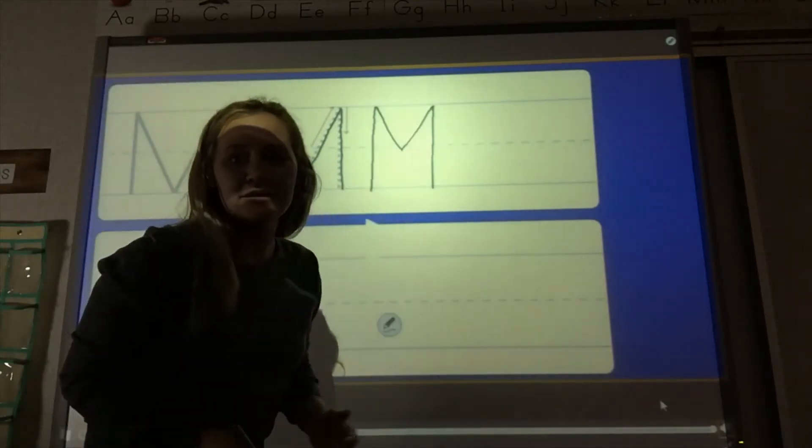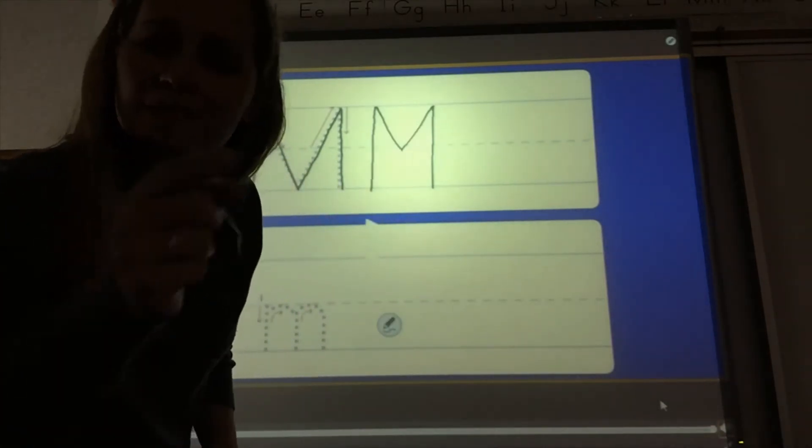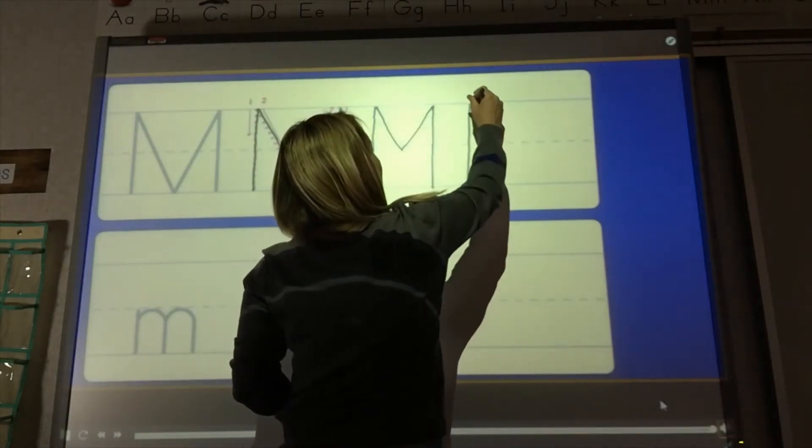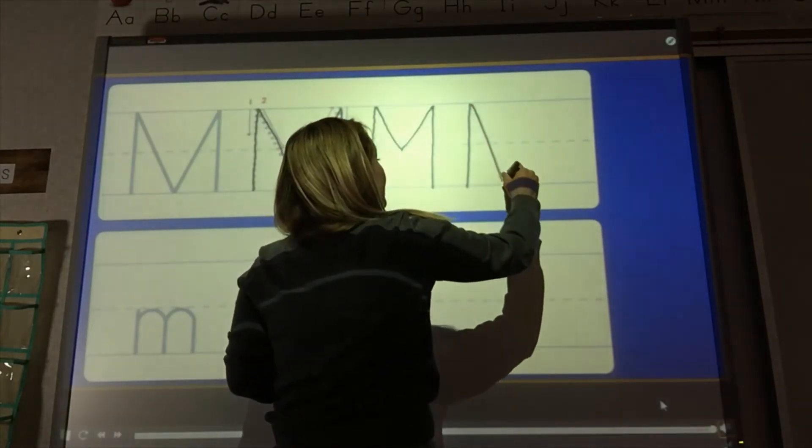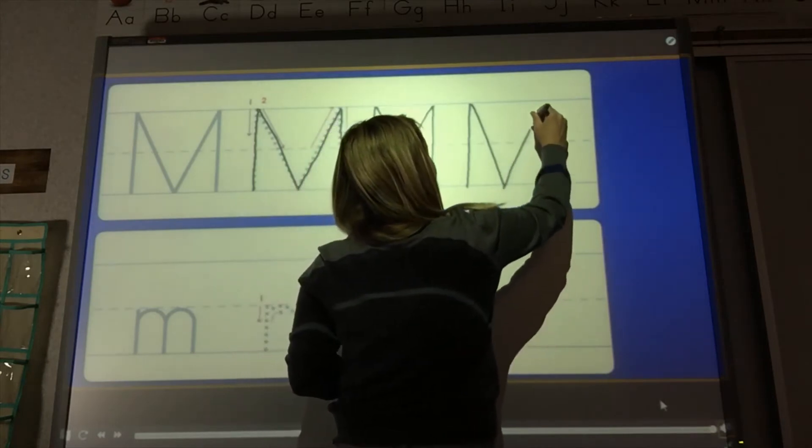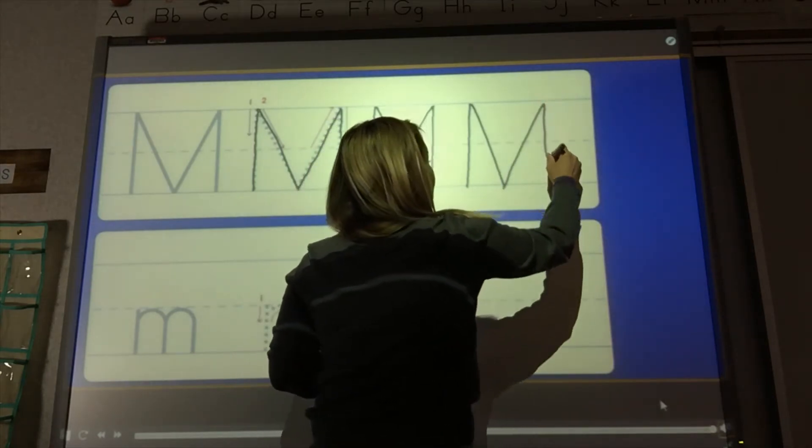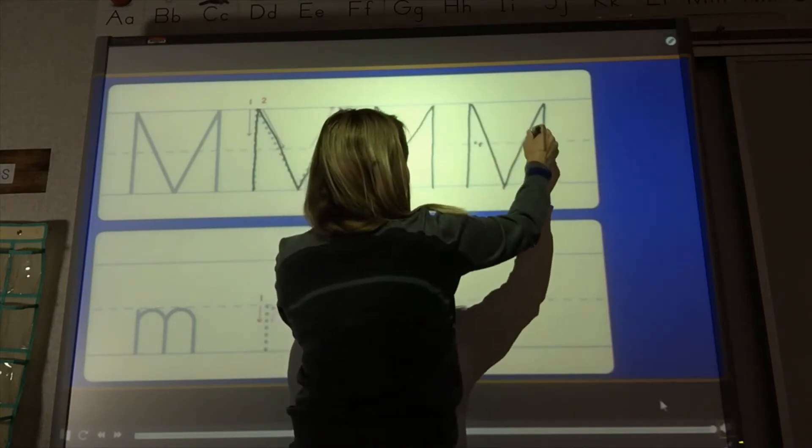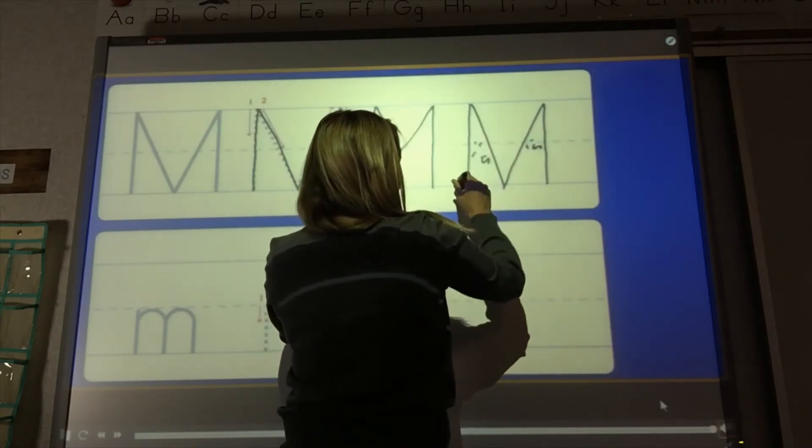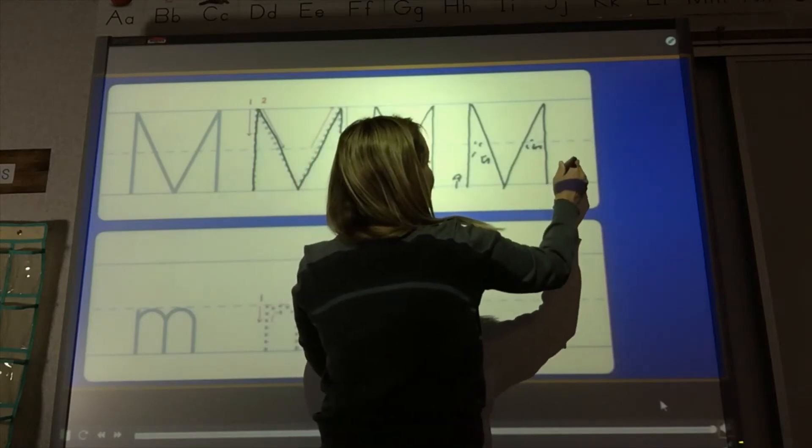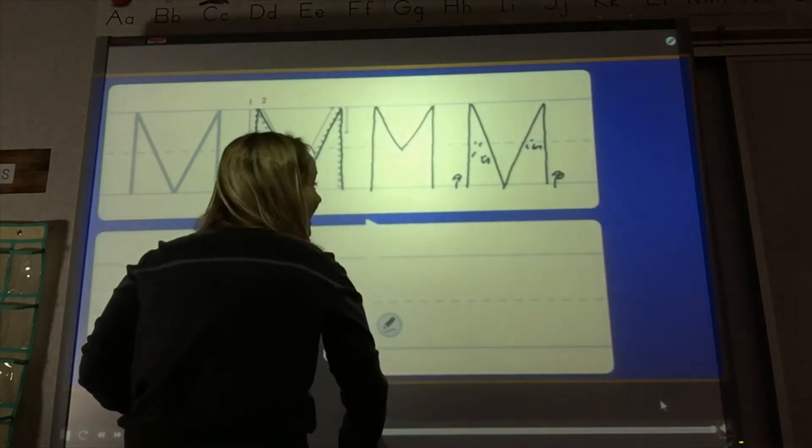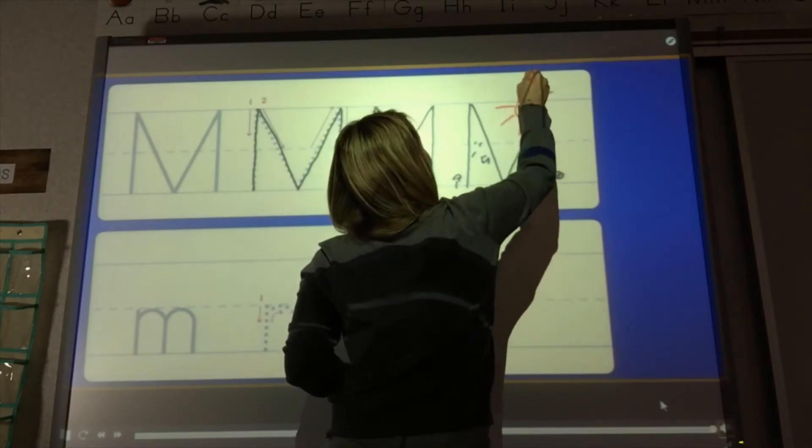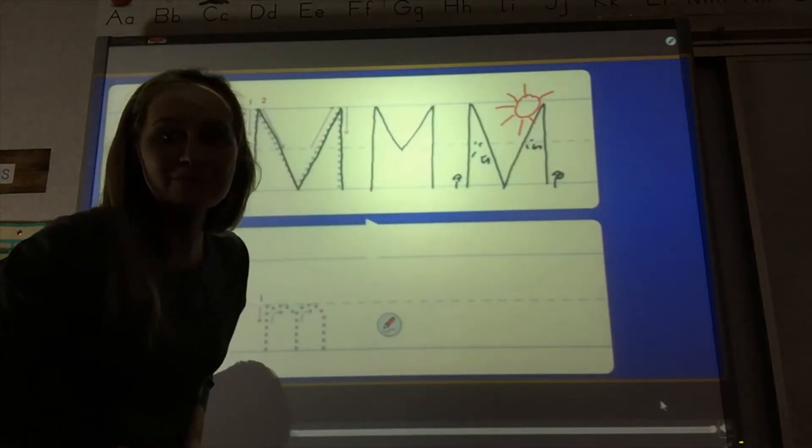The uppercase M looks like mountains. Let me show you. Straight line down. Straight slanty line. Slanty line back up. Straight line down. Kind of looks like mountains. Little trees down there. Doesn't it look like mountains?